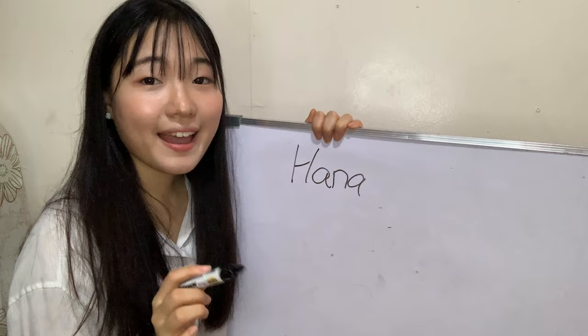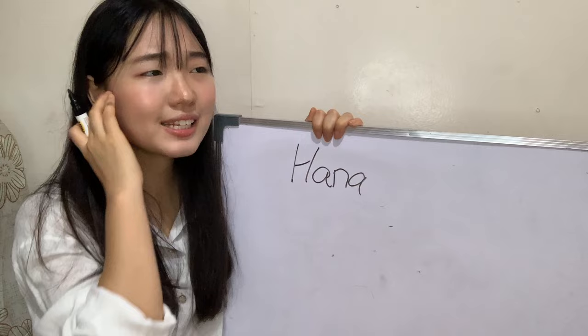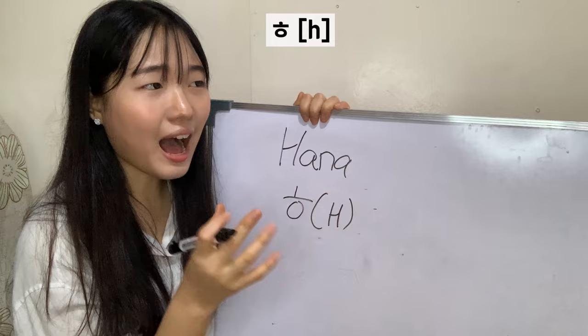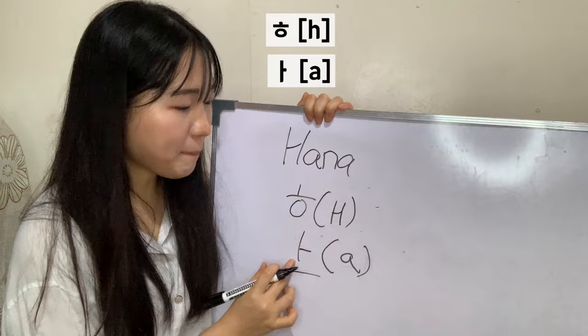So here, when we say Hannah, you can hear 'Ha.' It sounds like H, so we're going to use H. And for the A sound in 'Ha,' we're going to use the A sound vowel. If we combine H and A, it will become 'Ha.'